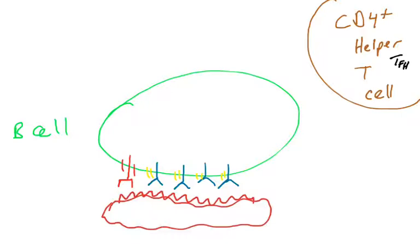There's a number of interactions that go on that allow this activated B cell to undergo the processes of isotype switching and affinity maturation, and these processes require interaction with the helper T cell.